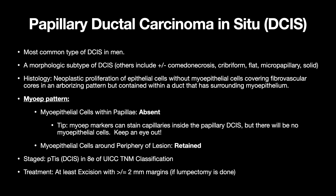Histologically, it's a neoplastic proliferation of epithelial cells without myoepithelial cells covering the fibrovascular cores, in an arborizing pattern, but all contained within a duct that has surrounding myoepithelium. So your myoepithelial pattern will be — when you get a myoep stain — myoepithelial cells within the papillae will be absent, and the myoepithelial cells around the periphery of the lesion will be retained.